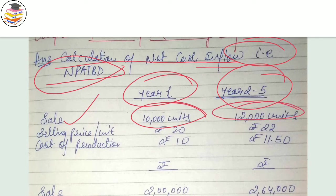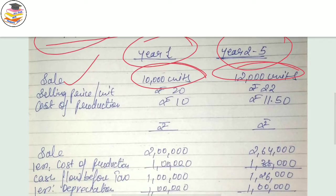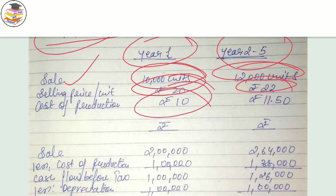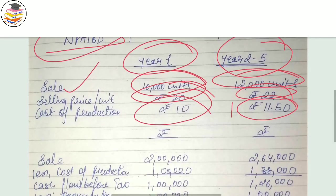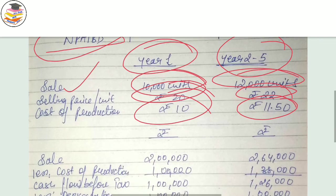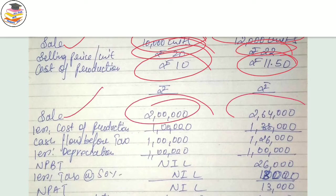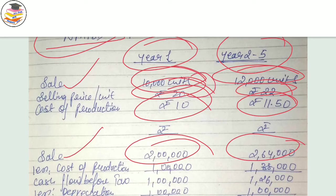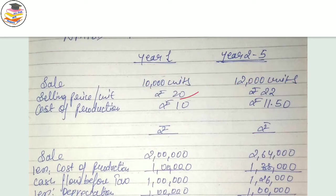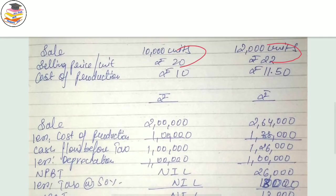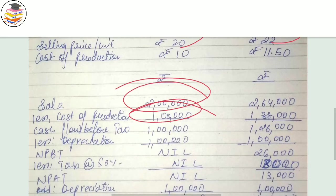The selling price per unit is rupees 20, and after a 10 percent increase it becomes 22 rupees from year 2 to year 5. The cost of production is 10 rupees and will increase by 15 percent to become 11.50 rupees. Now calculating in rupees: sales in year 1 = 10,000 × 20 = 2 lakh; sales in year 2 to 5 = 12,000 × 22 = 2 lakh 64 thousand. From sales, deduct the cost of production to get the cash inflow before tax.